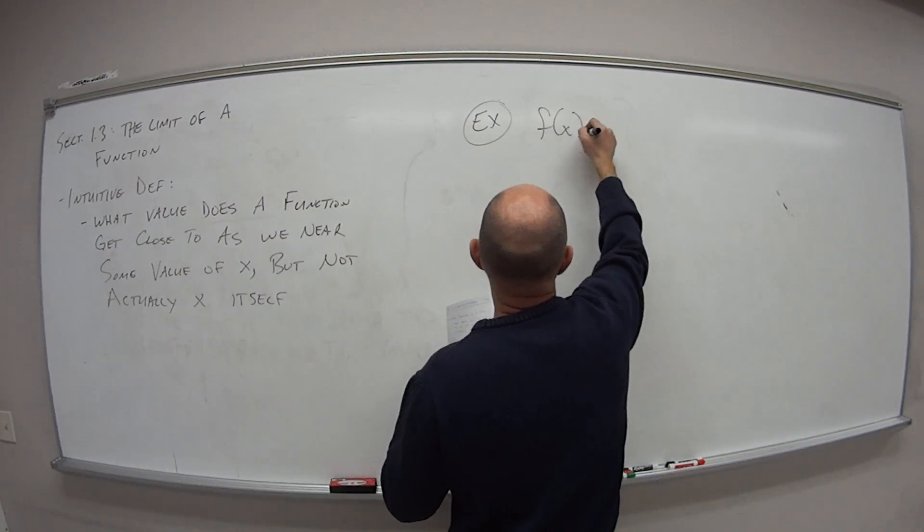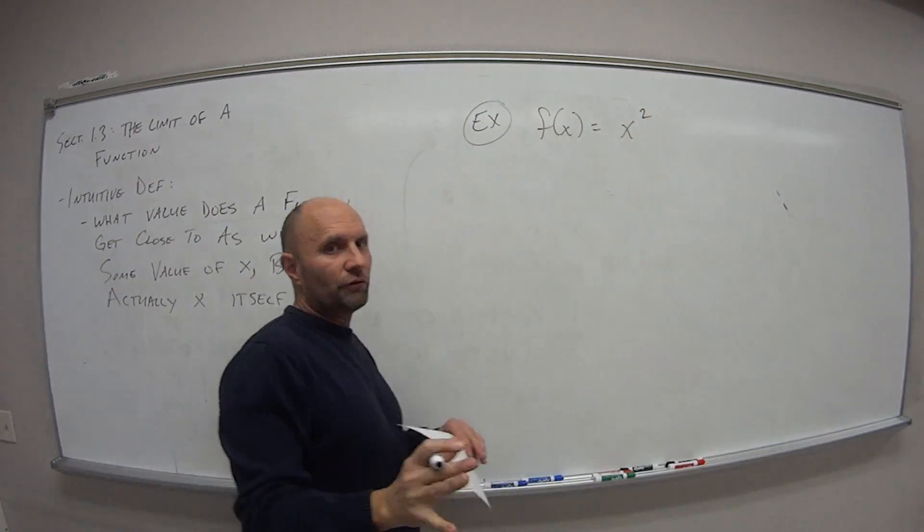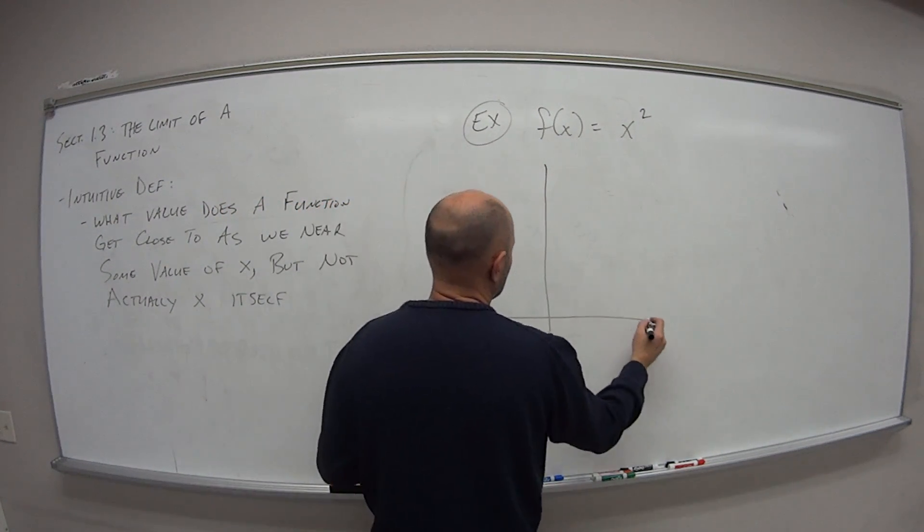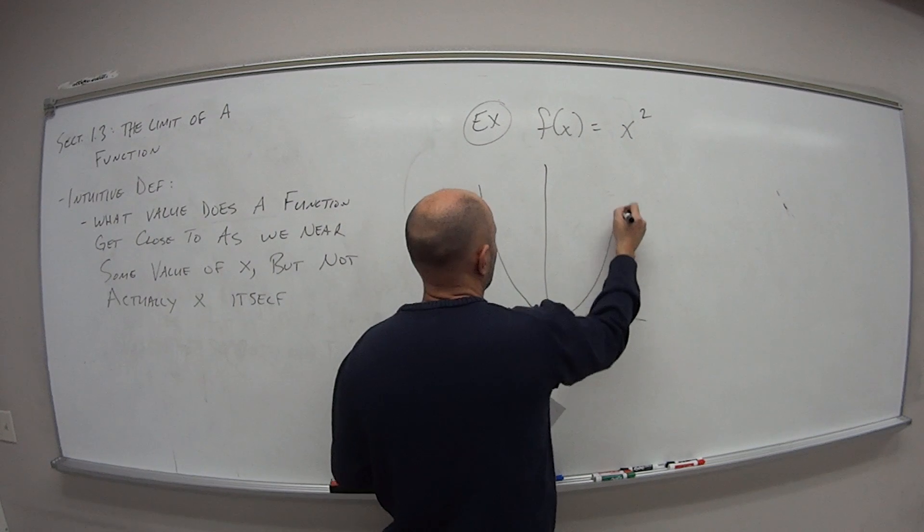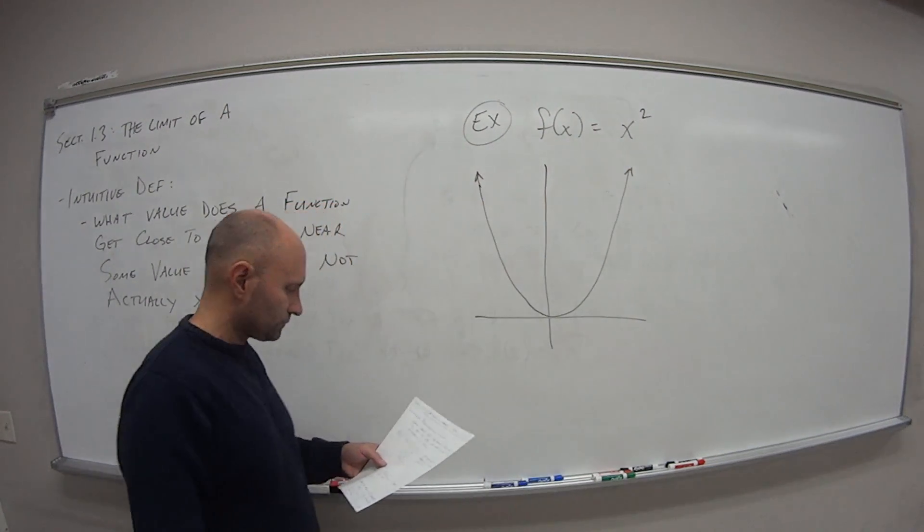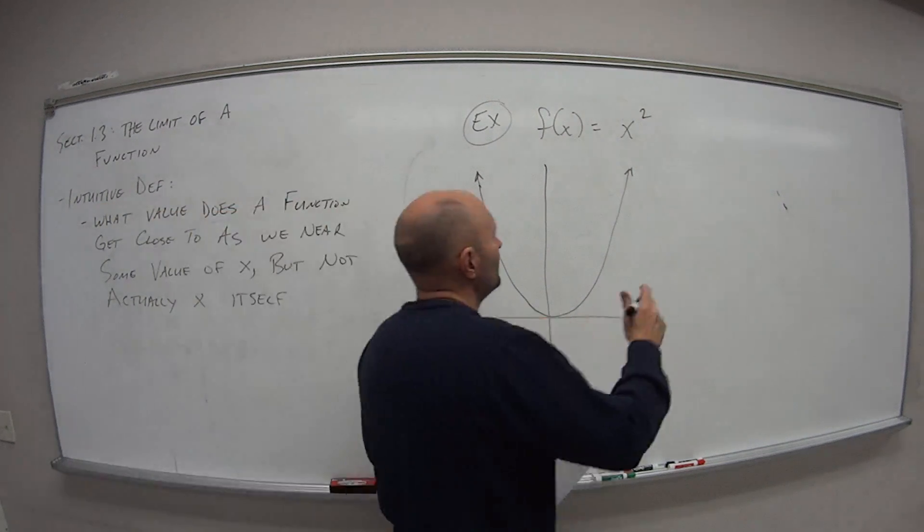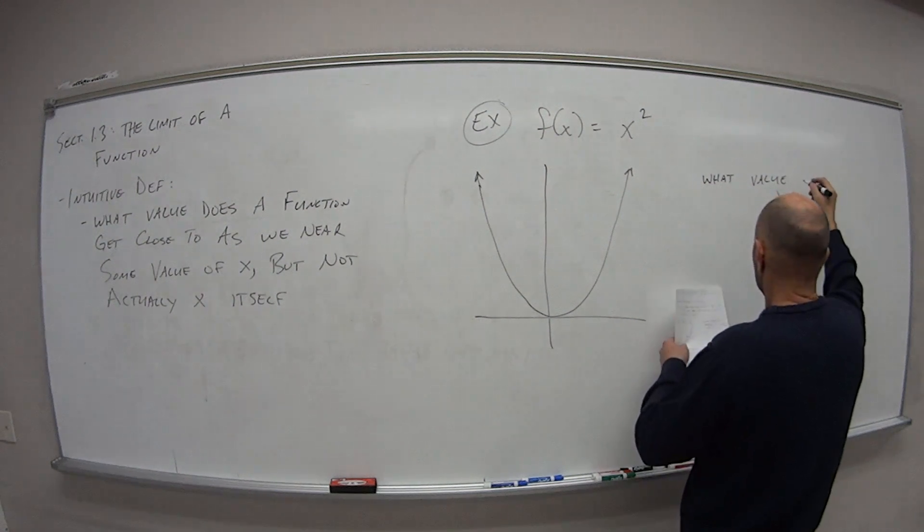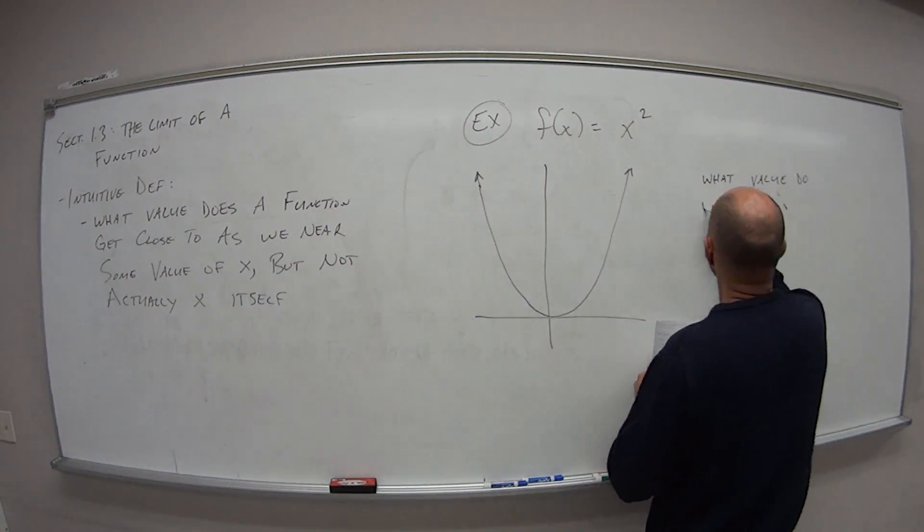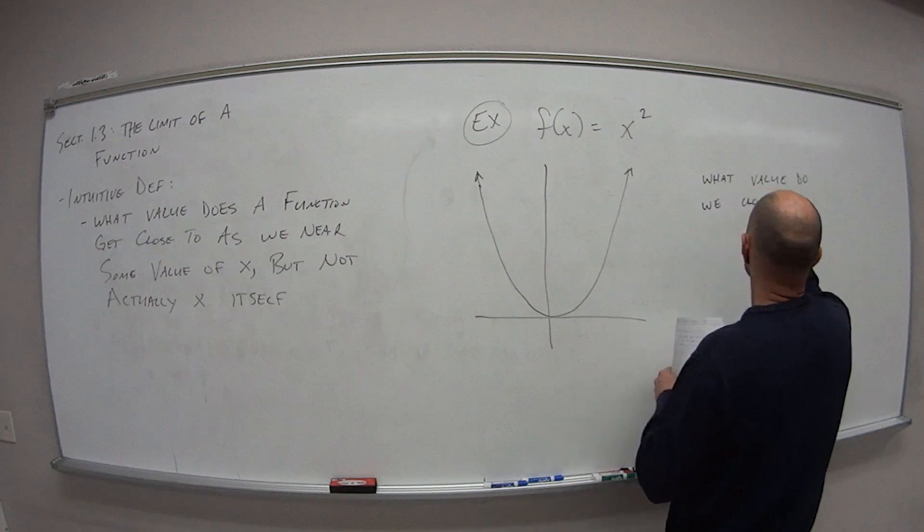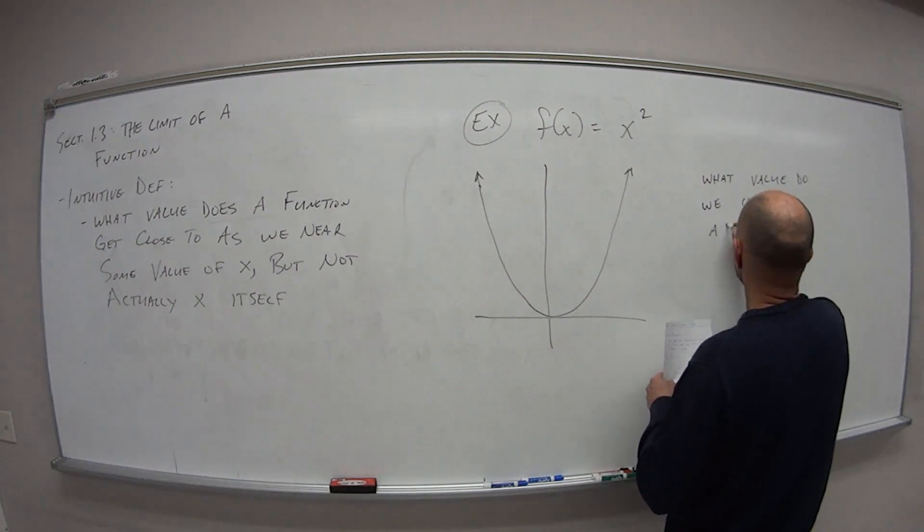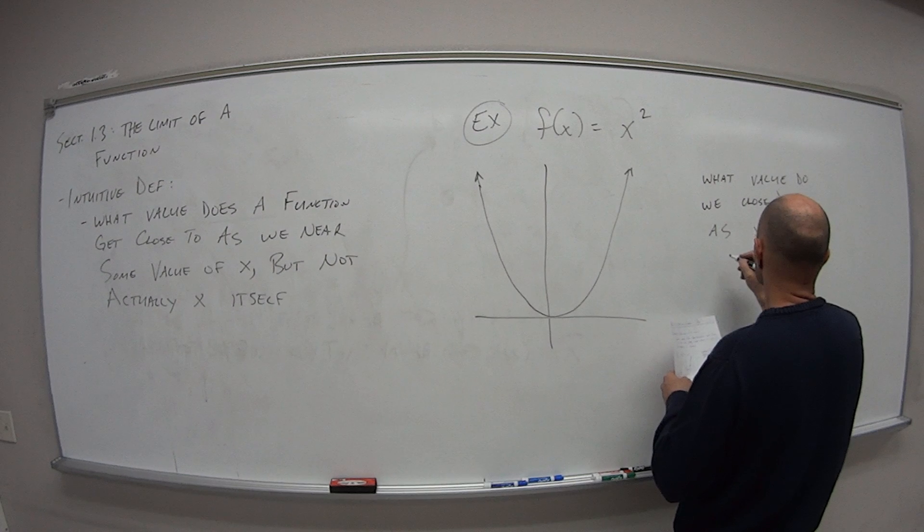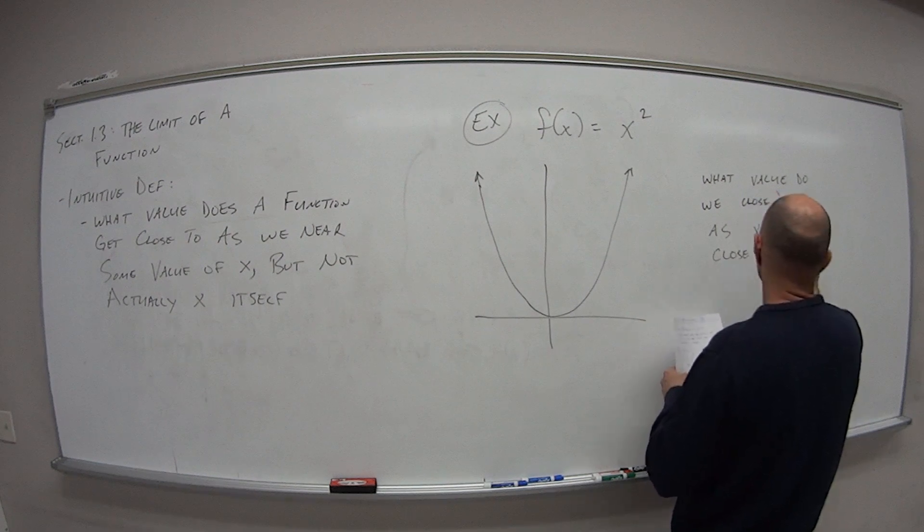Let's say we have the function f of x, which is equal to x squared, something hopefully you're pretty familiar with. x squared is our parabola. So from the intuitive standpoint, what value do we get close to as x gets close to 2?